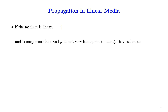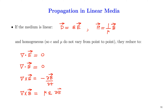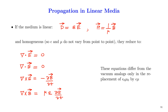Thus, if the medium is linear, we have D = εE and H = B/μ. For linear media, Maxwell's equations become: del·E = 0, del·B = 0, del×E = −∂B/∂t, and the corresponding equation for H. These equations are analogous to the vacuum equations; the only difference is that we have replaced ε₀ and μ₀ by ε and μ.